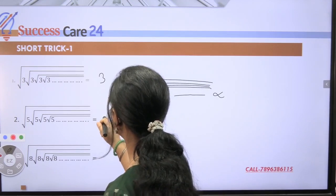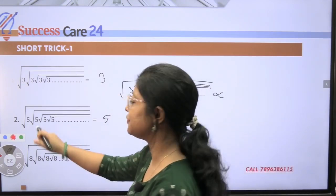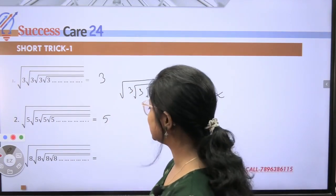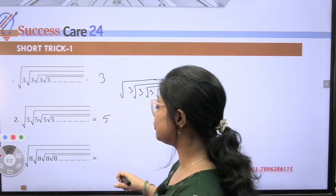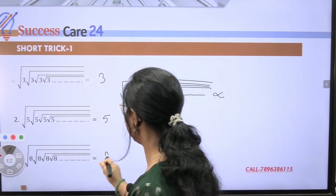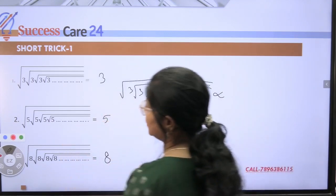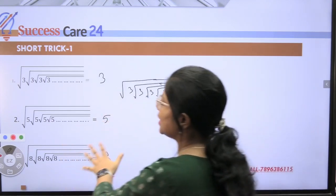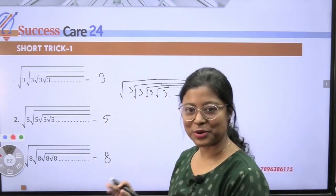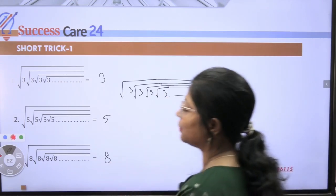The answer will be the term itself. If 5 is there, the answer will be 5. So the same pattern followed up to infinity — for example, if 8 is there, the answer is 8. This is the required answer. So this is our Short Trick Number One. If you see this pattern in your next exam, you will know how to attempt it.